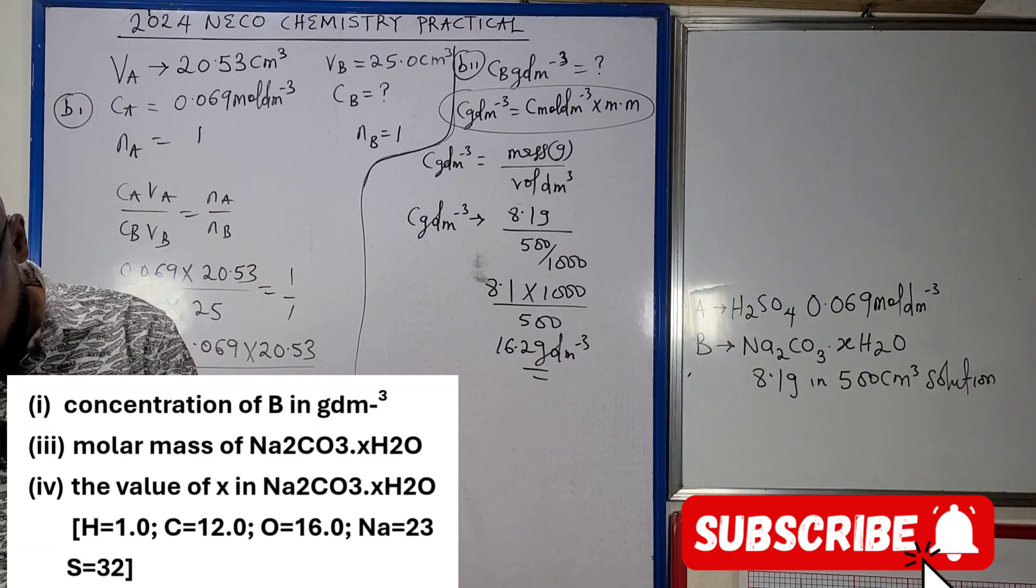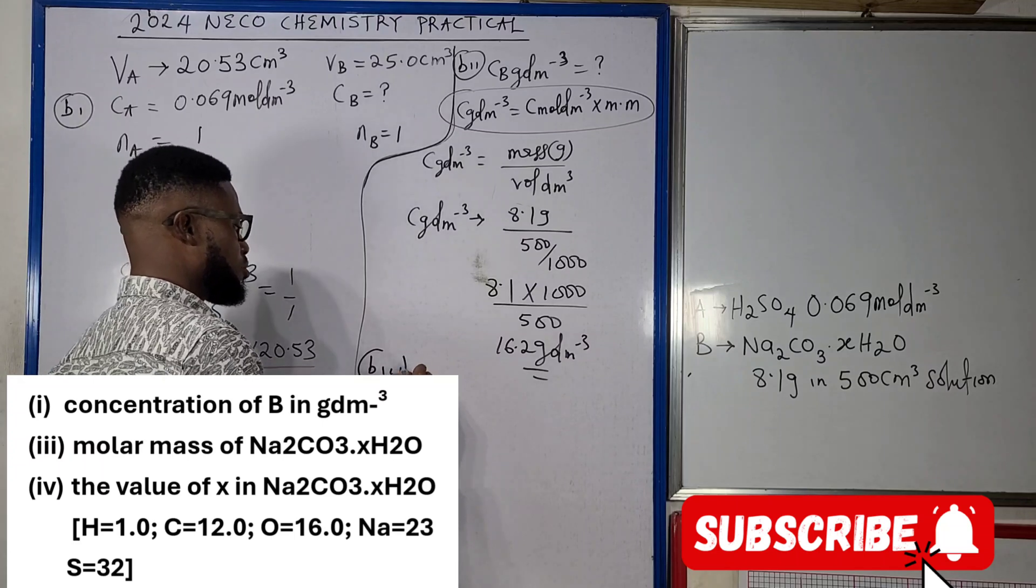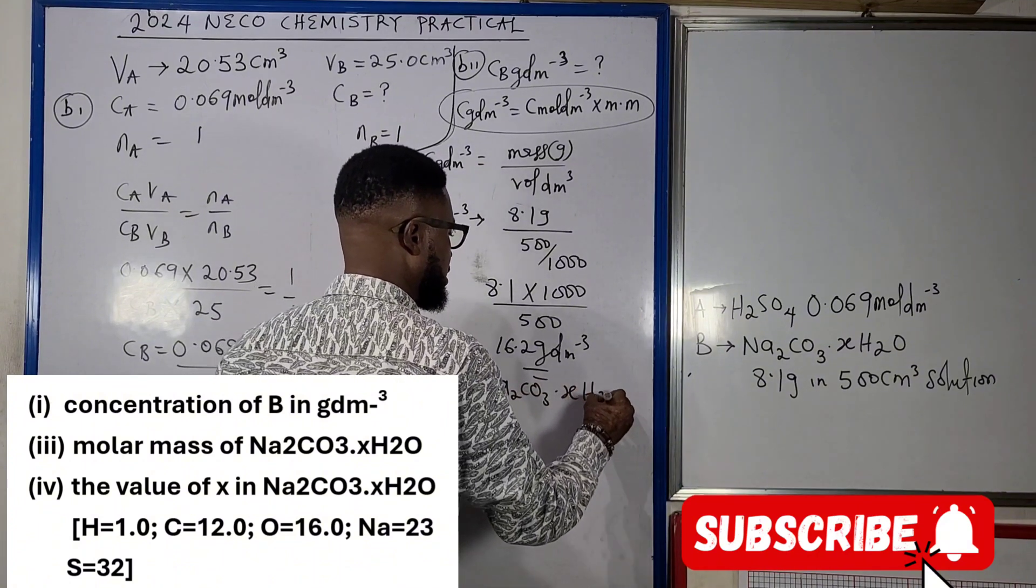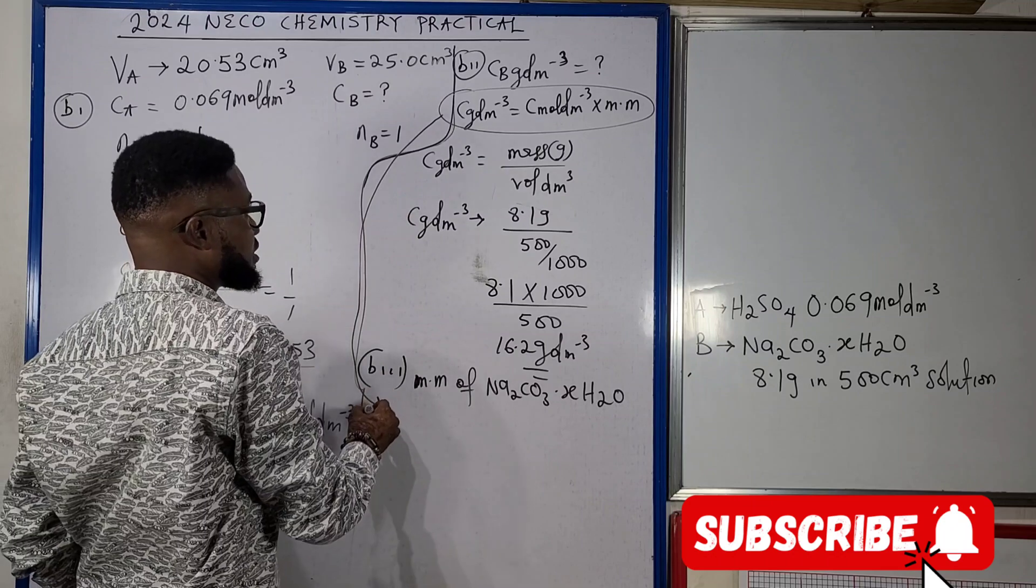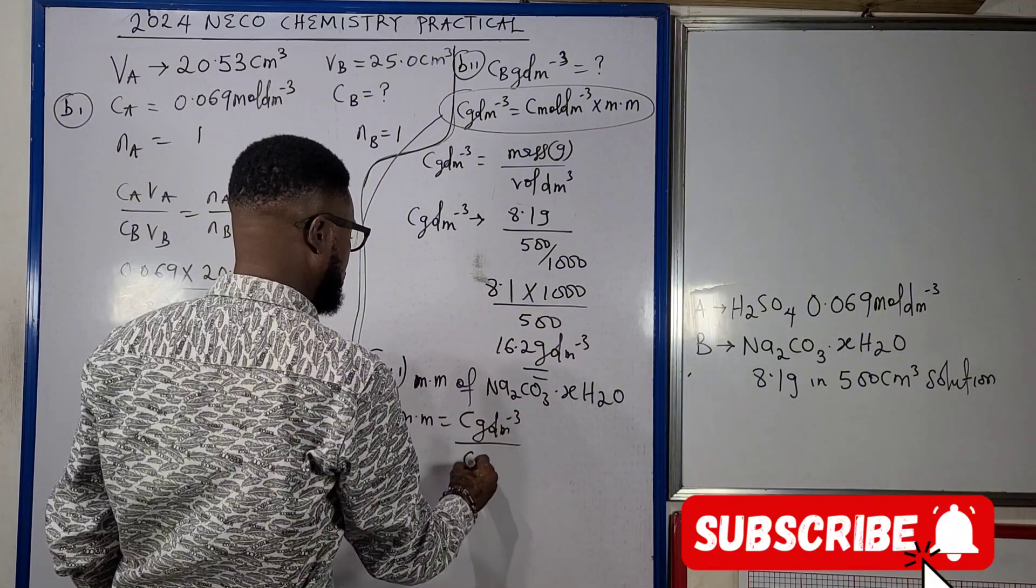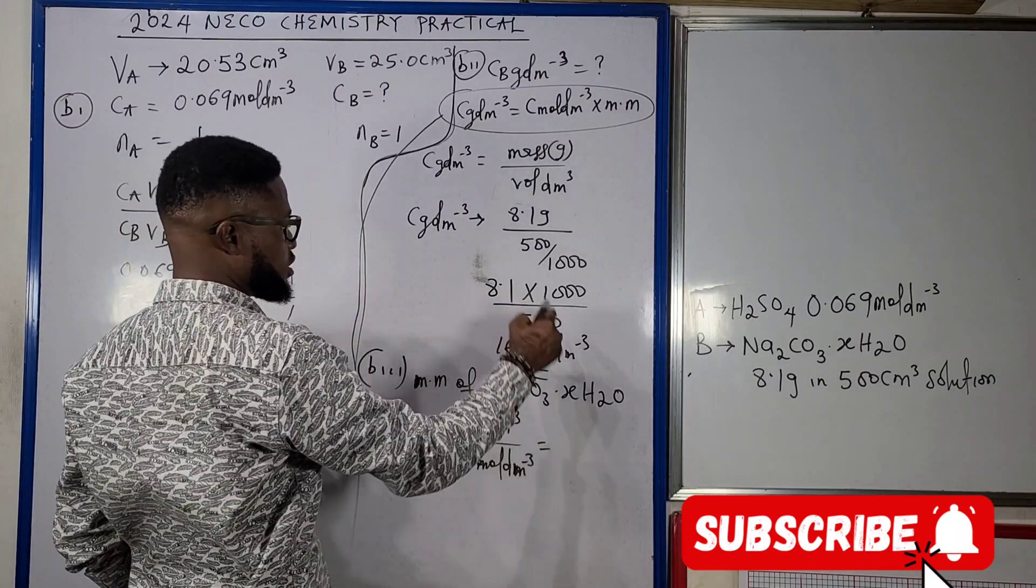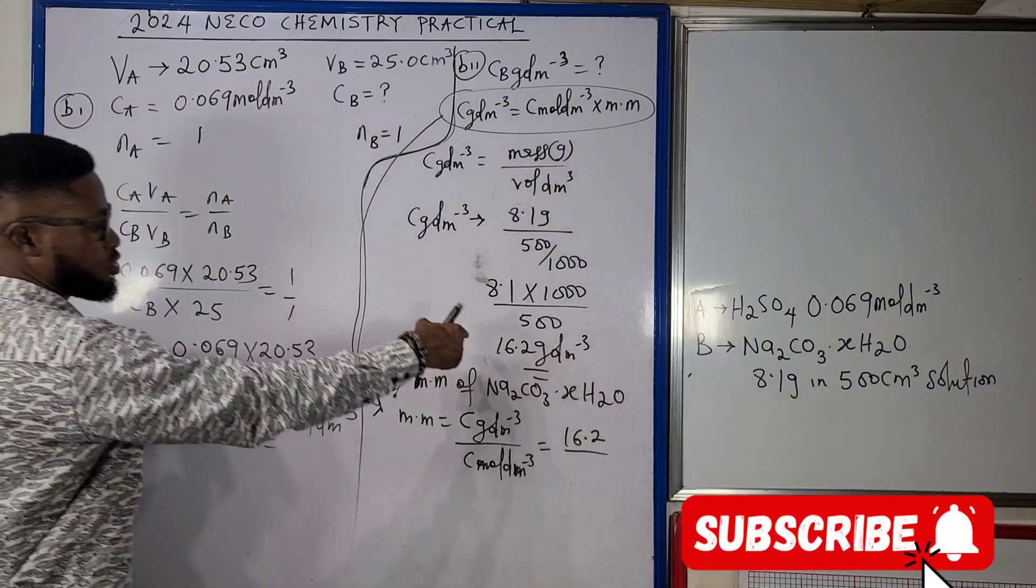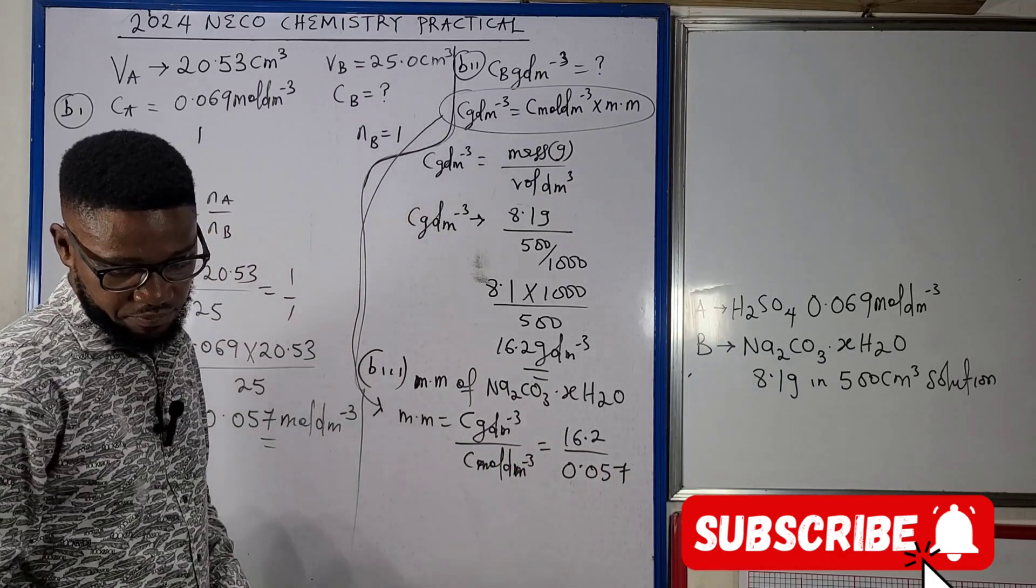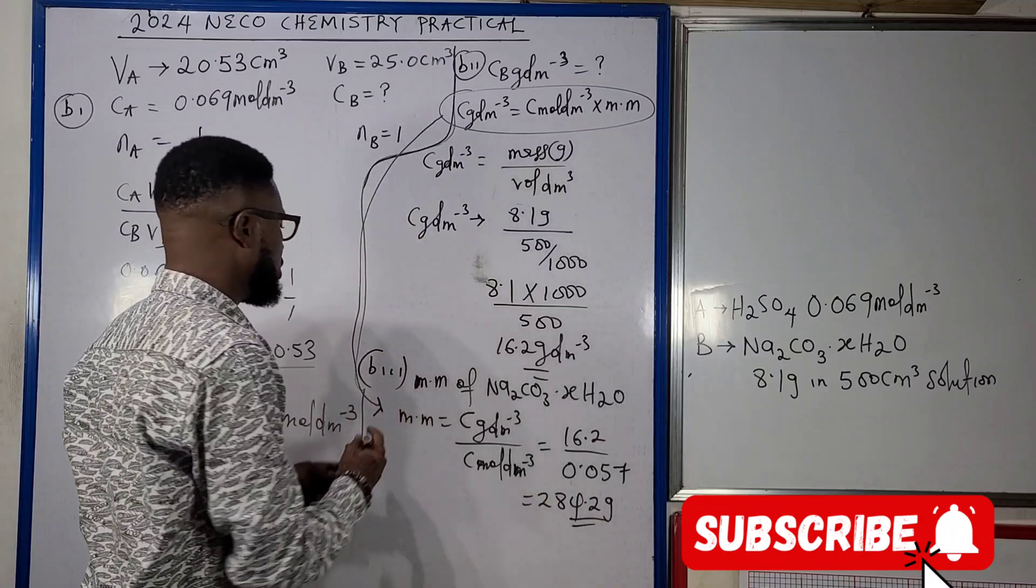If you look at question number three, it says molar mass of Na2CO3. We were told to calculate the molar mass of Na2CO3 dot xH2O. I gave a formula here: the molar mass is actually concentration in gram per dm cube divided by the concentration in mole per dm cube. The implication of which is 16.2, that's the mass concentration in gram per dm cube, divided by 0.057. If we compute this, 284.2 grams. So that is the molar mass of Na2CO3 dot xH2O.